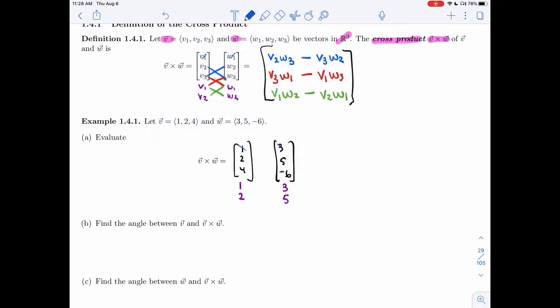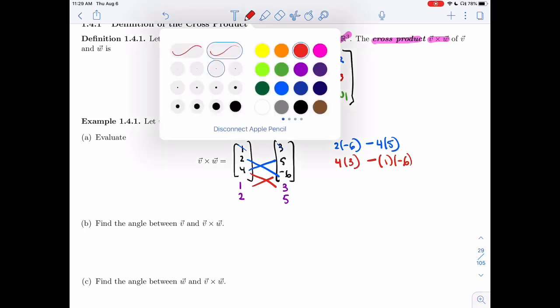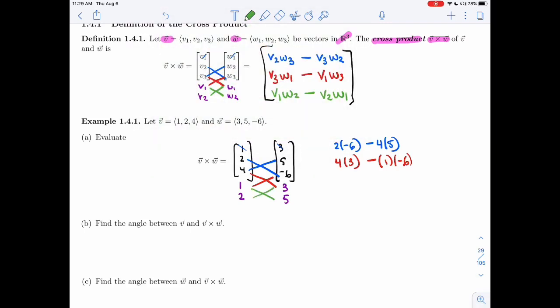I'm going to use the same color just so you can see. I'm going to ignore 1 and 3 for now. I'm going to take this downward. So it's 2 times minus 6 minus 4 times 5. And then I'm going to use this X here for the second. So 4 times 3 minus 1 times minus 6.